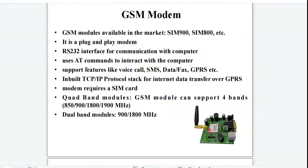The GSM modem requires a SIM card. GSM modules can support 4 different frequency bands: 850MHz, 900MHz, 1800MHz, and 1900MHz. GSM modules that support 2 different frequency bands are called dual band modules, with frequencies of 900 and 1800MHz.